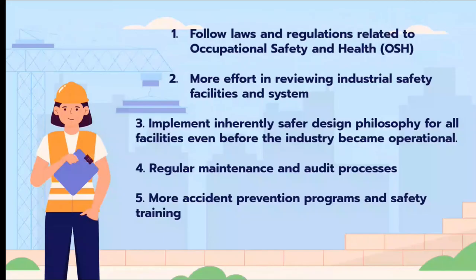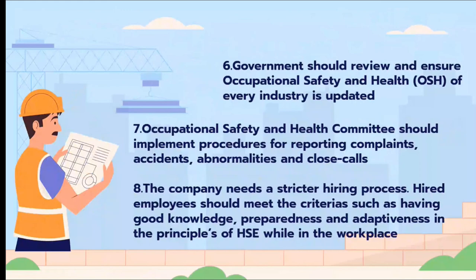For recommendations: follow laws and regulations related to occupational safety and health; put more effort into improving industrial safety facilities and systems; implement inherently safer design philosophy for all facilities before the industry becomes operational; perform regular maintenance and audit processes; and conduct more accident prevention programs and safety training. The government should review and ensure occupational safety and health support for every industry is kept updated. The occupational safety and health committee should implement procedures for reporting complaints, accident abnormalities, and near misses. Finally, companies need a stricter hiring process — employees should meet criteria such as having good knowledge, preparedness, and adaptiveness in safety principles in the workplace.